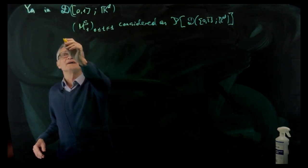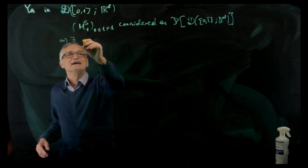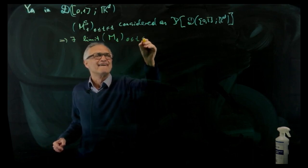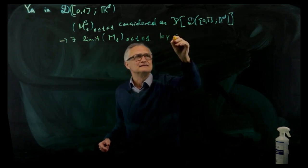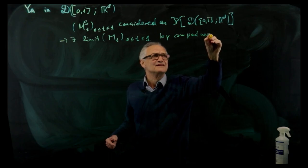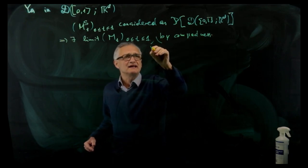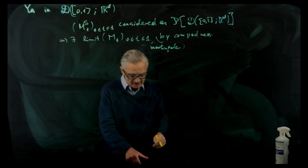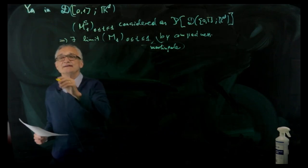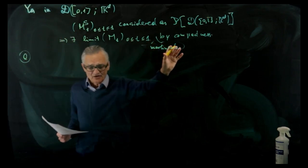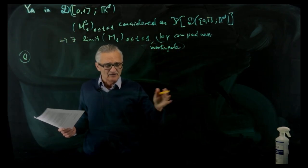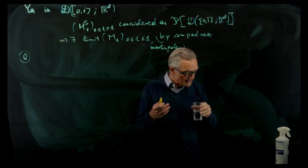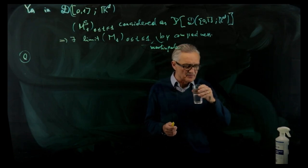By easy compactness, there exists a limit M^P. This is a martingale — you just check that the martingale property is retained in the limit. The Skorokhod topology is designed exactly so that you have this compactness result. This was the end of the proof of the cheap theorem. The questions are: is this limit M Markov? Is it perhaps strong Markov — and we have seen there is an important difference — is it continuous, and is it unique?